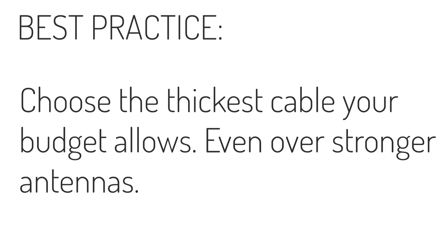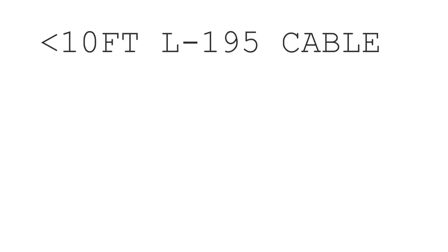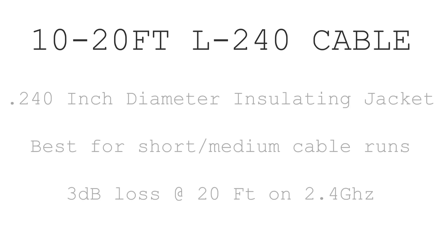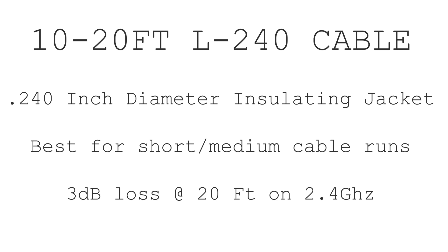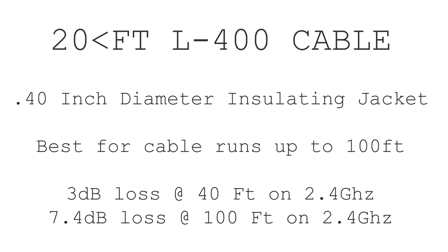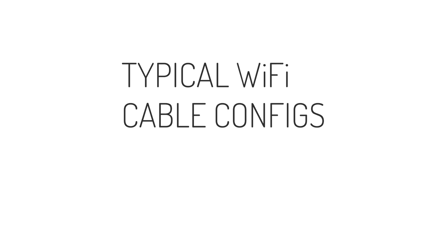Step two is the type, or really the thickness, of the cable. You always want to go with the thickest cable your budget allows, since a thicker cable provides more insulating jacket for the RF signal. For cable runs less than 10 feet you can get by with LMR-195, which is the cable typically used as pigtails on antennas. The next step up is LMR-240, which has the best cost-to-performance ratio for runs up to 20 feet. For anything more than that, you'll want to upgrade to LMR-400, which is much thicker and is good for runs between 20 and 100 feet with minimal RF loss.